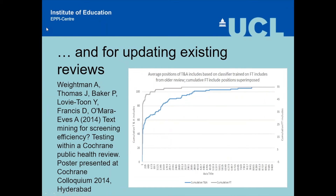For updating existing reviews, this is a very useful technology. If you've got all of the decisions from the existing review and the scope hasn't changed, you've basically got all the citation screening data. You can build a model straight from that and usually get very good performance in classifying citations by relevance, using the ranking in the same ways you would — but with more data to work with, so you get a good model earlier in the process.